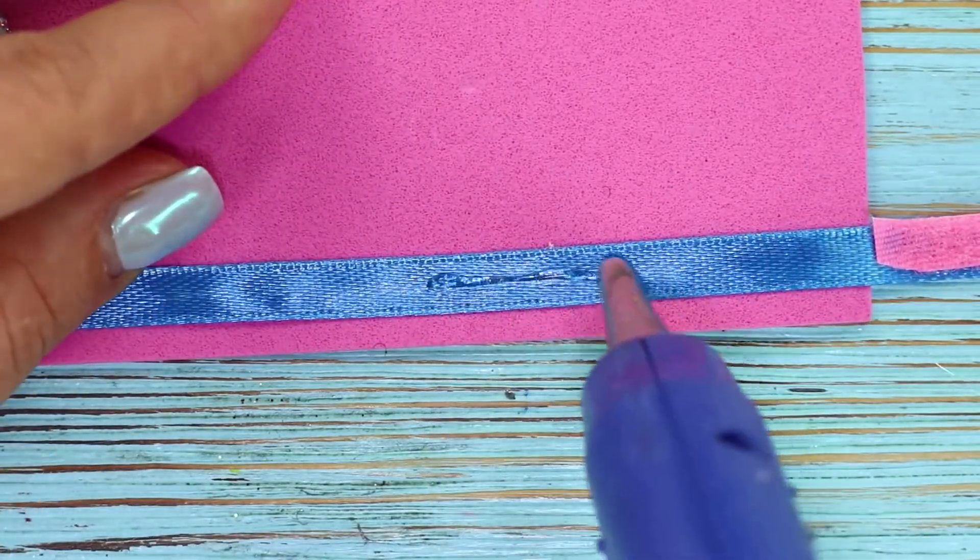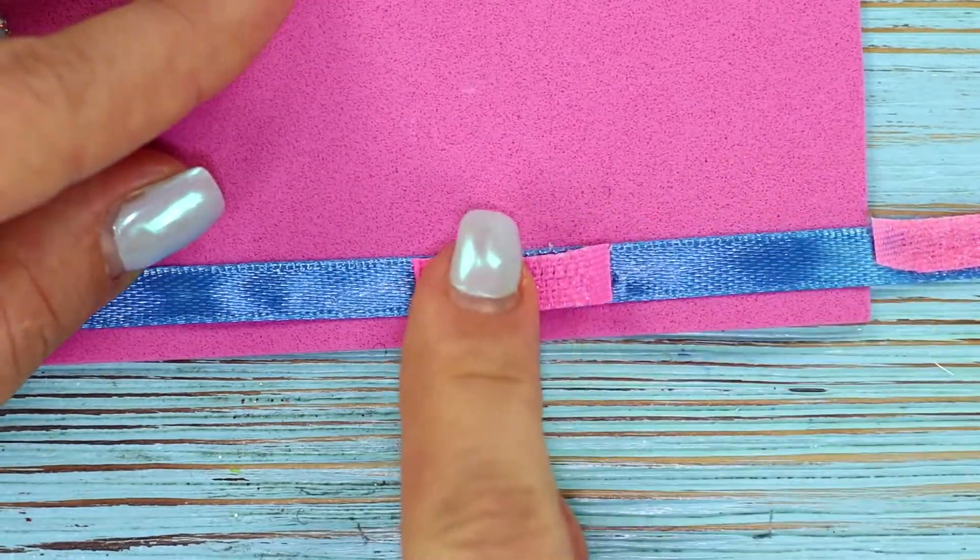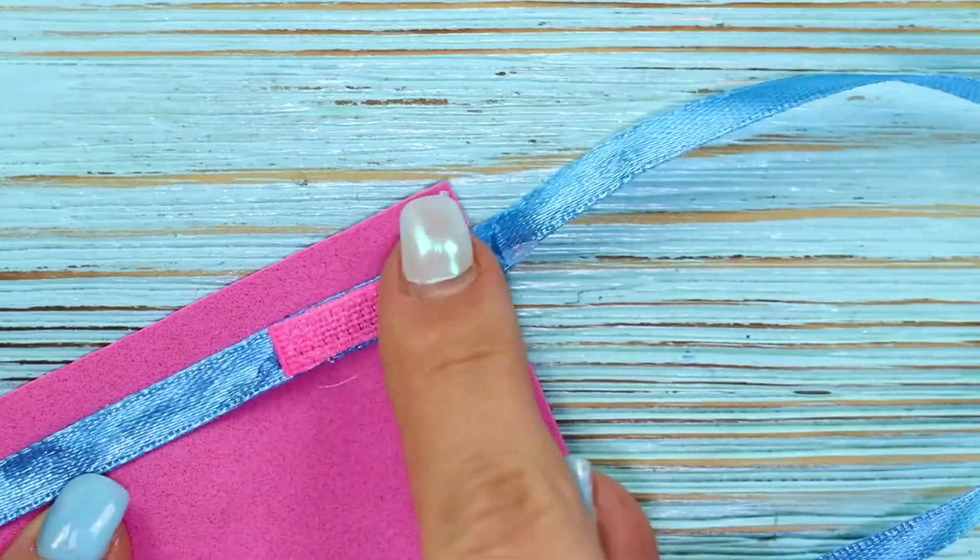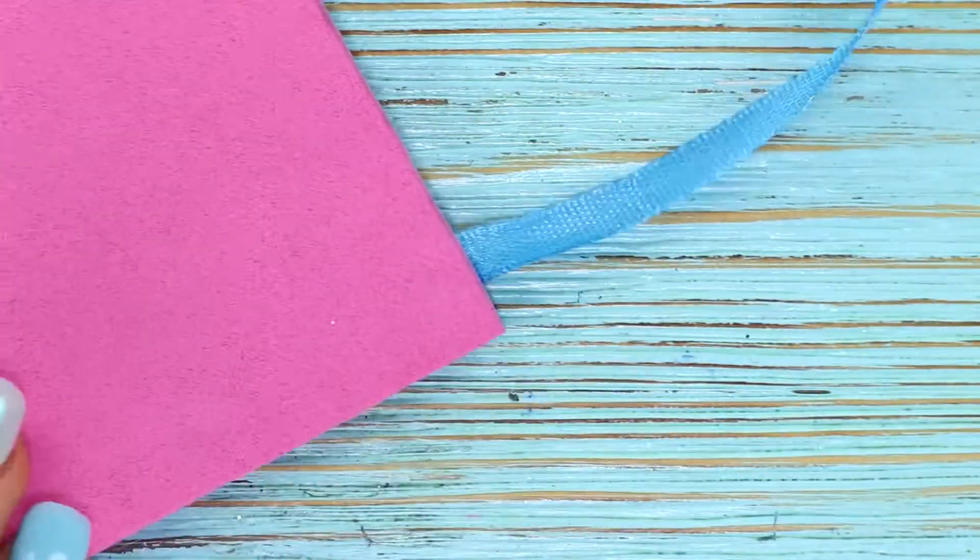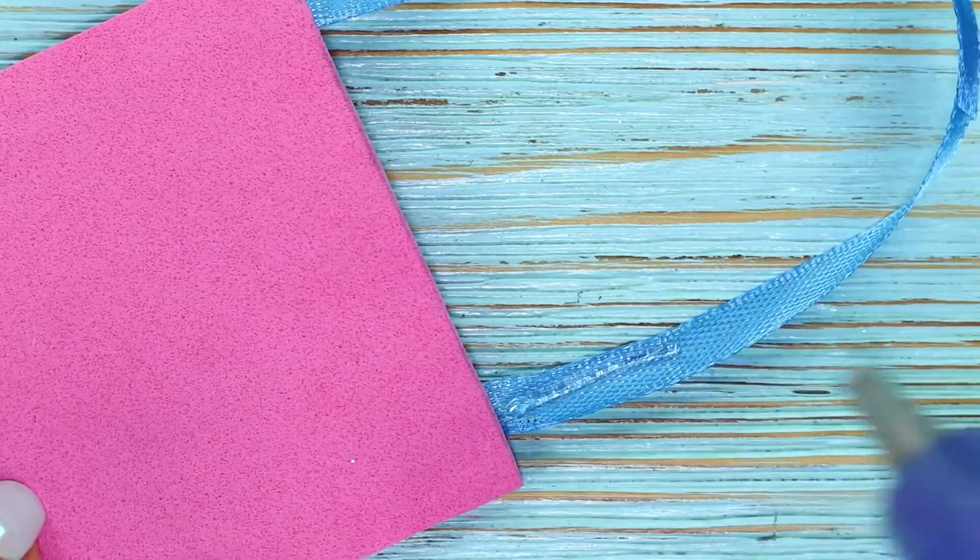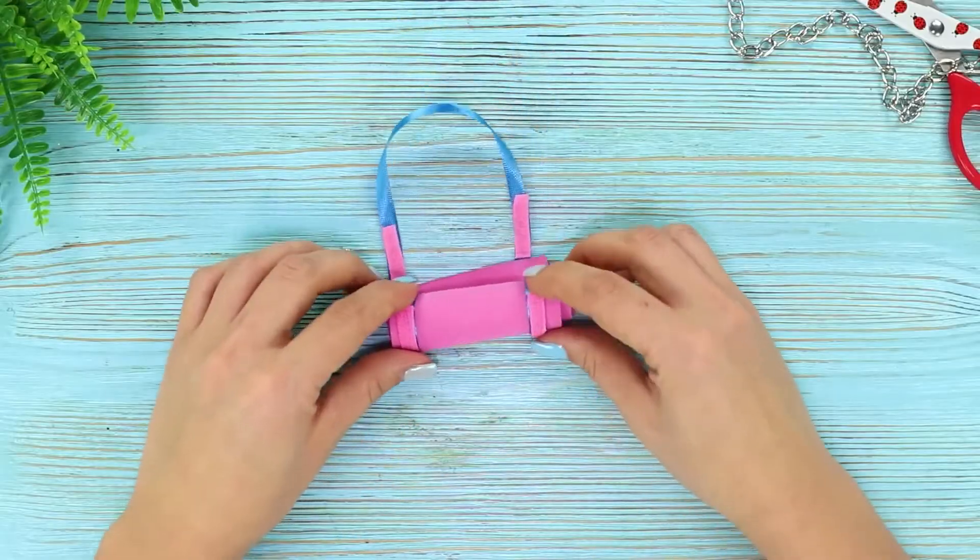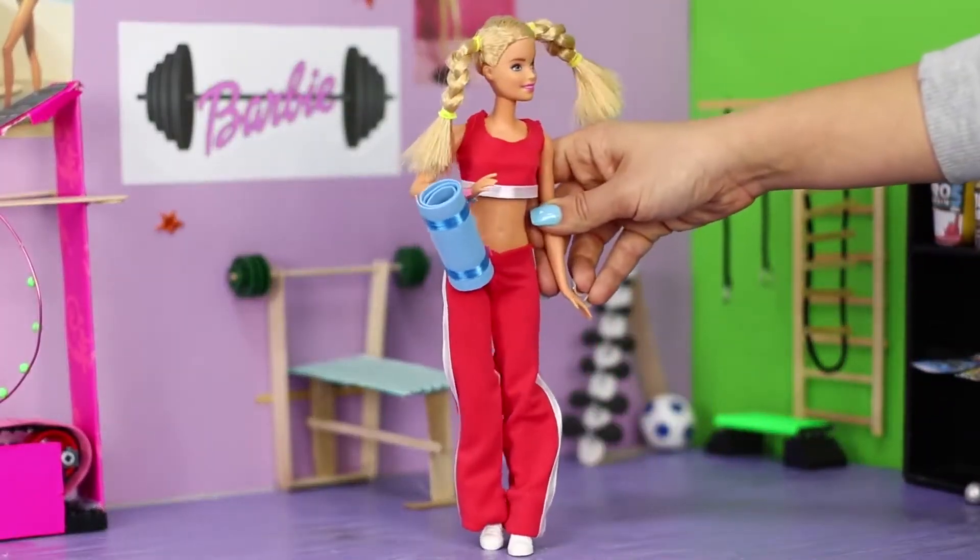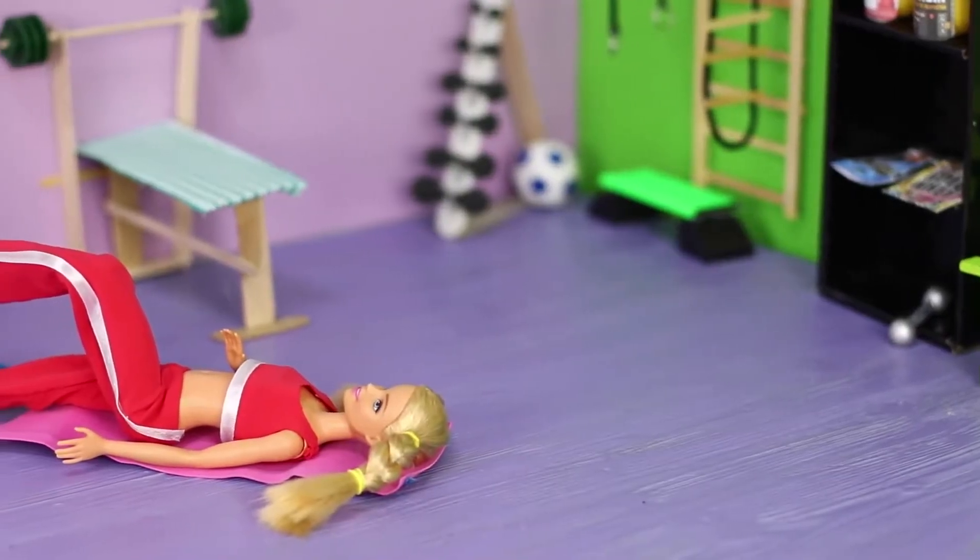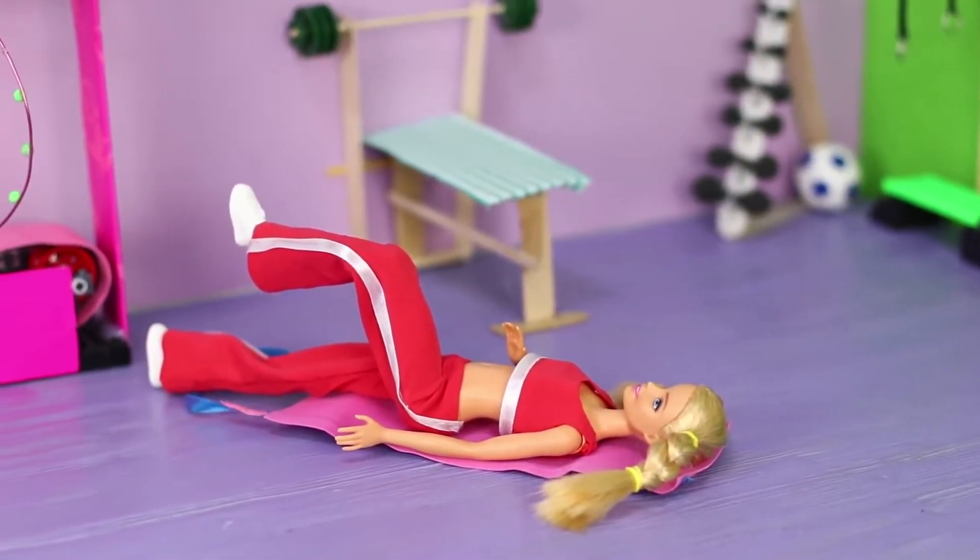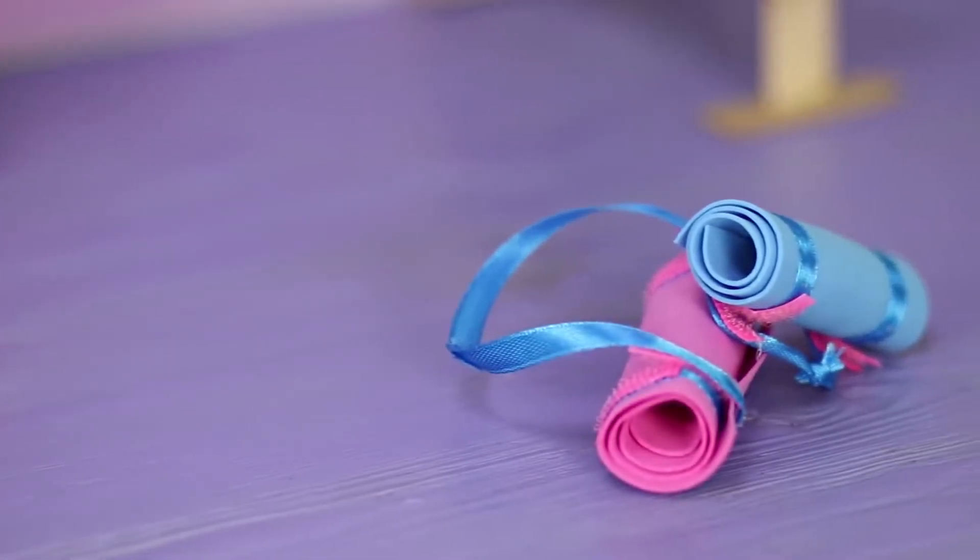Leave a small space and fasten another piece of velcro. Glue two more pieces of velcro on the second ribbon. Roll the foam rubber sheet in a tube and fasten it with velcro. Now Barbie has her own comfortable mat for yoga and meditation. The doll believes that she will reach her long-awaited enlightenment in a few minutes. Om!